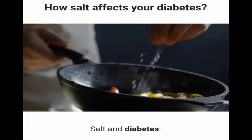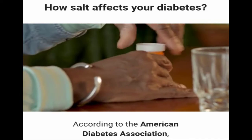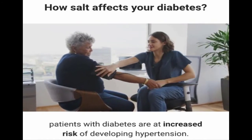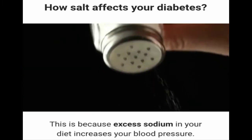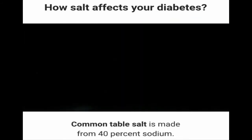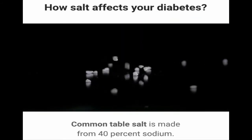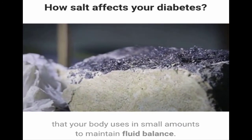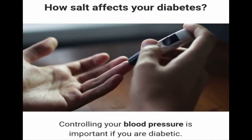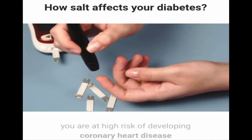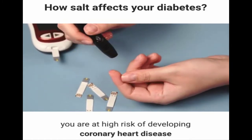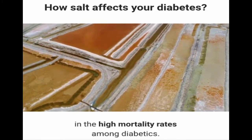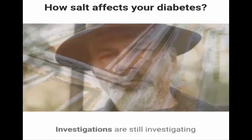According to the American Diabetes Association, patients with diabetes are at increased risk of developing hypertension, because excess sodium in your diet increases your blood pressure. Common table salt is made from 40% sodium, an essential mineral your body uses in small amounts to maintain fluid balance. Controlling blood pressure is important if you are diabetic — if you are hypertensive and diabetic, you are at high risk of developing coronary heart disease or an enlarged heart. Furthermore, high salt intake plays a role in the high mortality rates among diabetics.